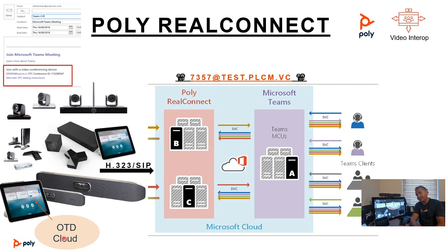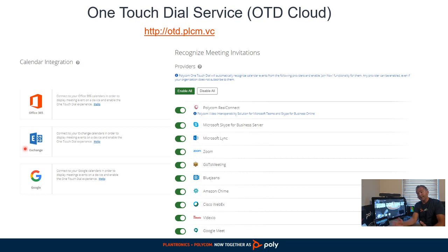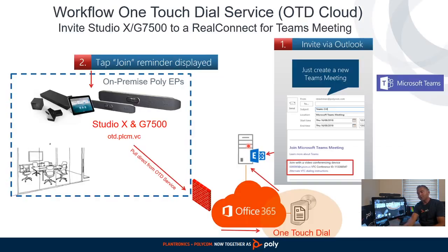A user walks in the room and they can join a meeting. Now if we look at One Touchdown — this gives you the experience where you get your calendaring and just press a button. One Touchdown is available as a free cloud service and you can enable different video provider services in there, so it's very powerful and there are new ones added at any time. Because this is a cloud service, we can keep it up to date. The One Touchdown service will make sure that if you scheduled a RealConnect meeting — a Teams invite, or a Zoom meeting — the join button will show up on an endpoint.